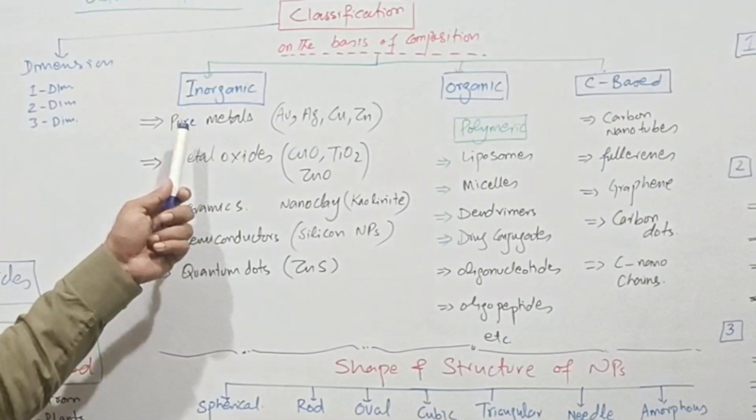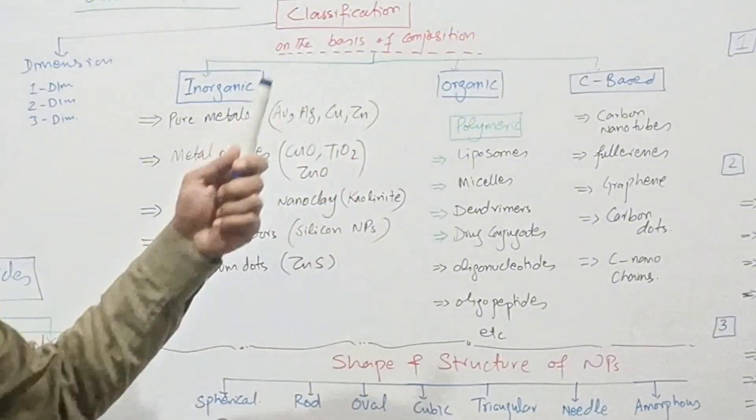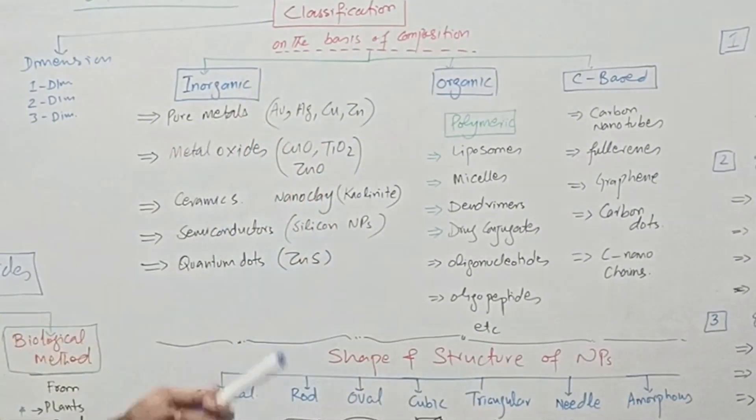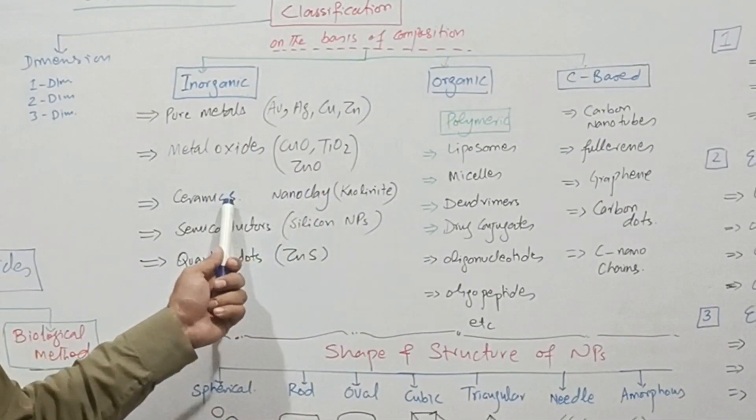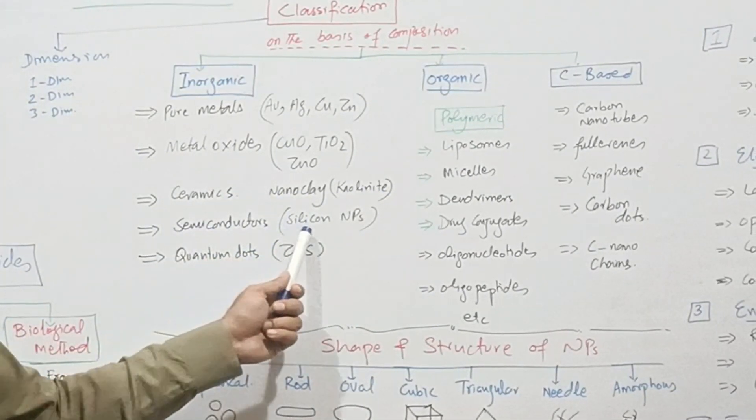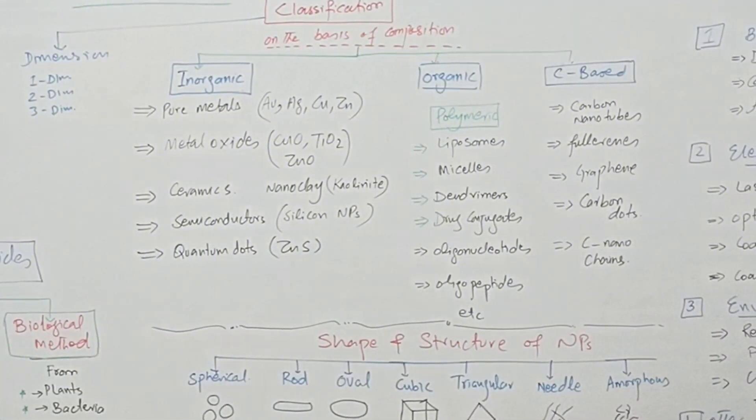Inorganic nanoparticles may consist of pure metals such as gold, silver, copper, zinc, etc. Metal oxides: copper oxide, titanium, zinc and other oxides. Ceramics, for example kaolinite. Semiconductors, for example silicon nanoparticles. Quantum dots, for example zinc sulfide.